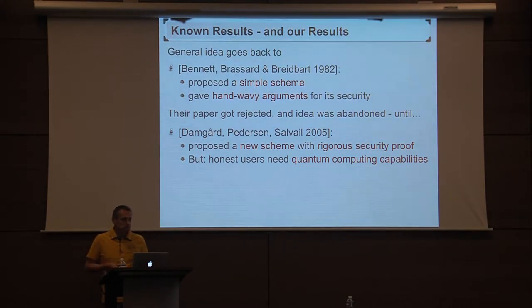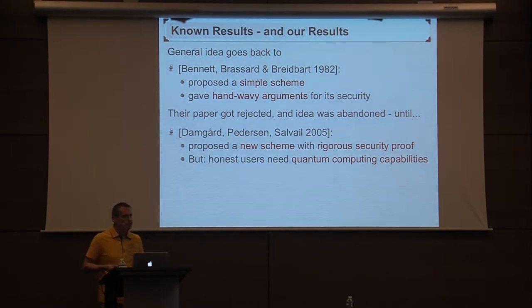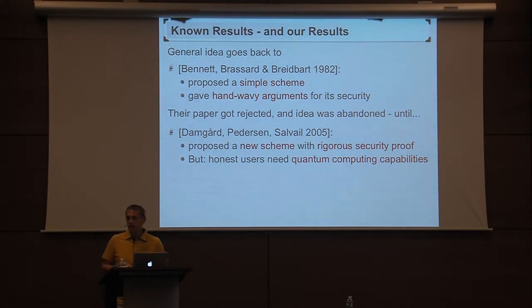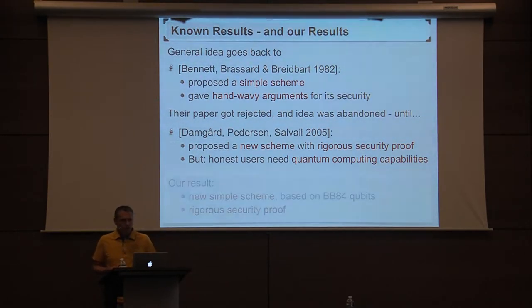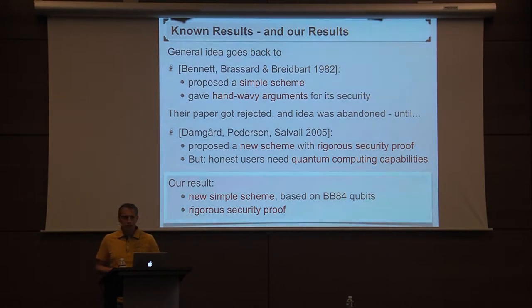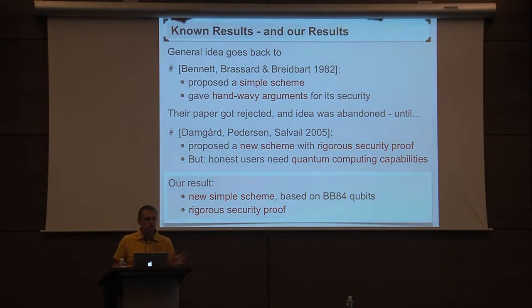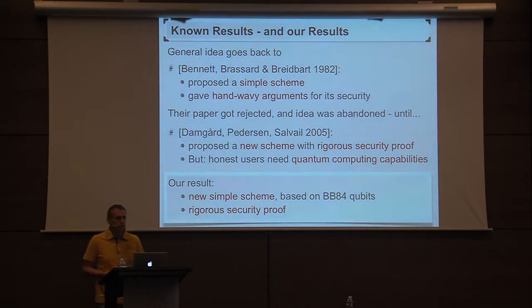However, their scheme was more complicated than the original scheme. In particular, the quantum encoding was more sophisticated to the point that in order to actually perform it, you need quantum computing capabilities — meaning honest users executing that scheme need a quantum computer. Our result is a new simple scheme, very much in the spirit of the original scheme by Bennett et al., based on what we now call BB84 qubits — simple quantum states dealable with current technology. No quantum computing is involved, and of course our scheme comes with a rigorous security proof as well.